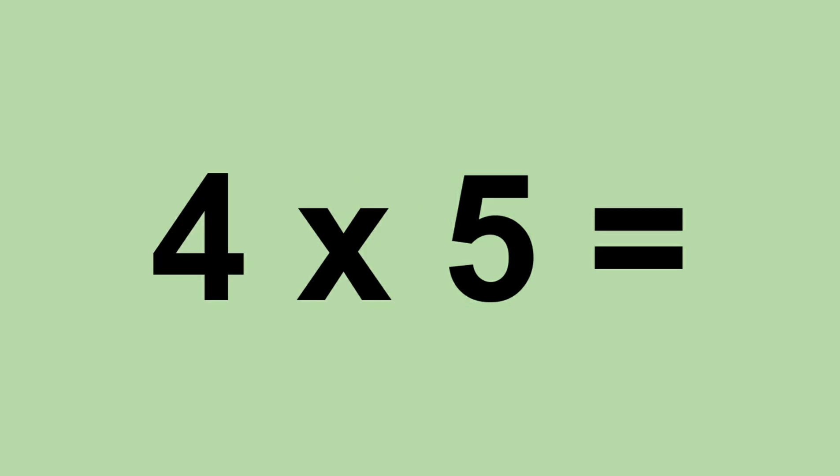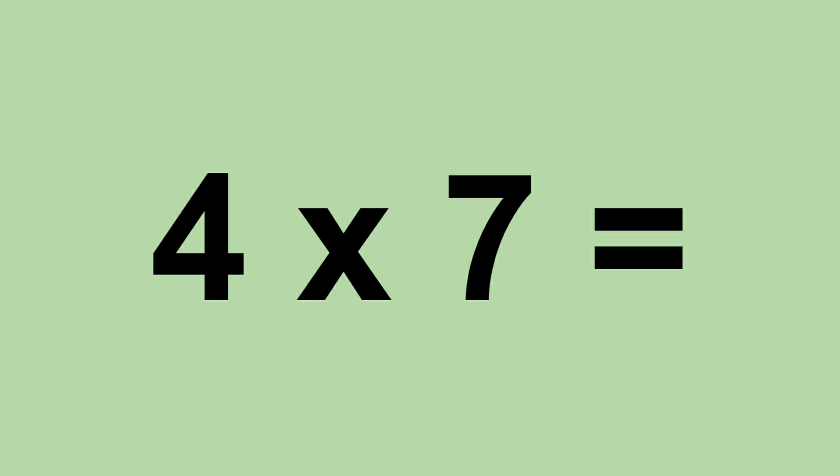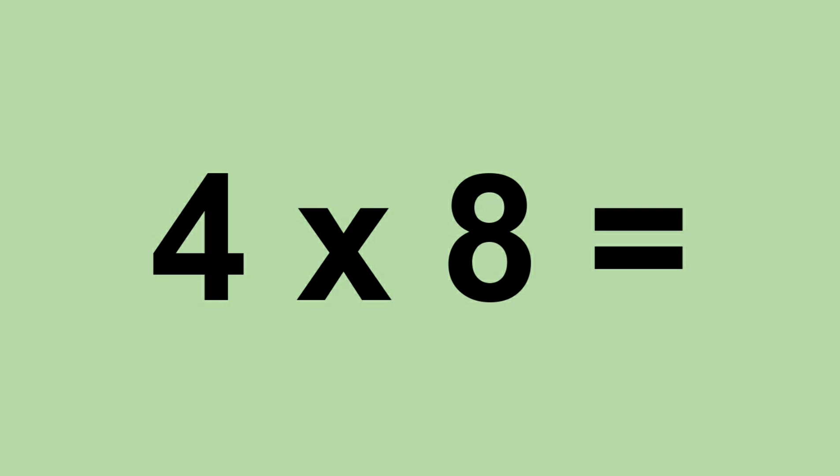Four times ten equals twenty-six. Four times six equals twenty-four. Four times seven equals twenty-eight. Four times eight equals thirty-two.